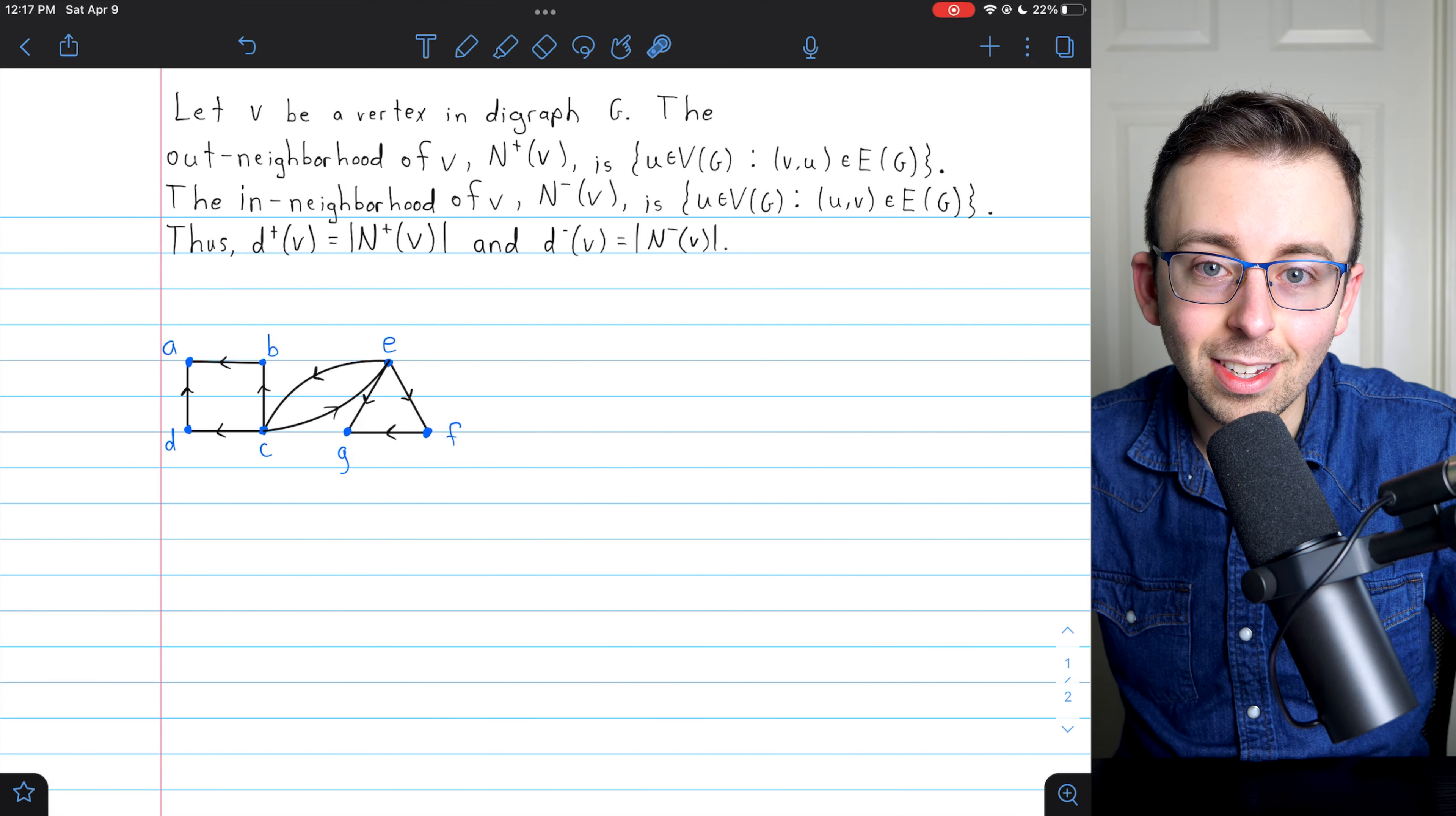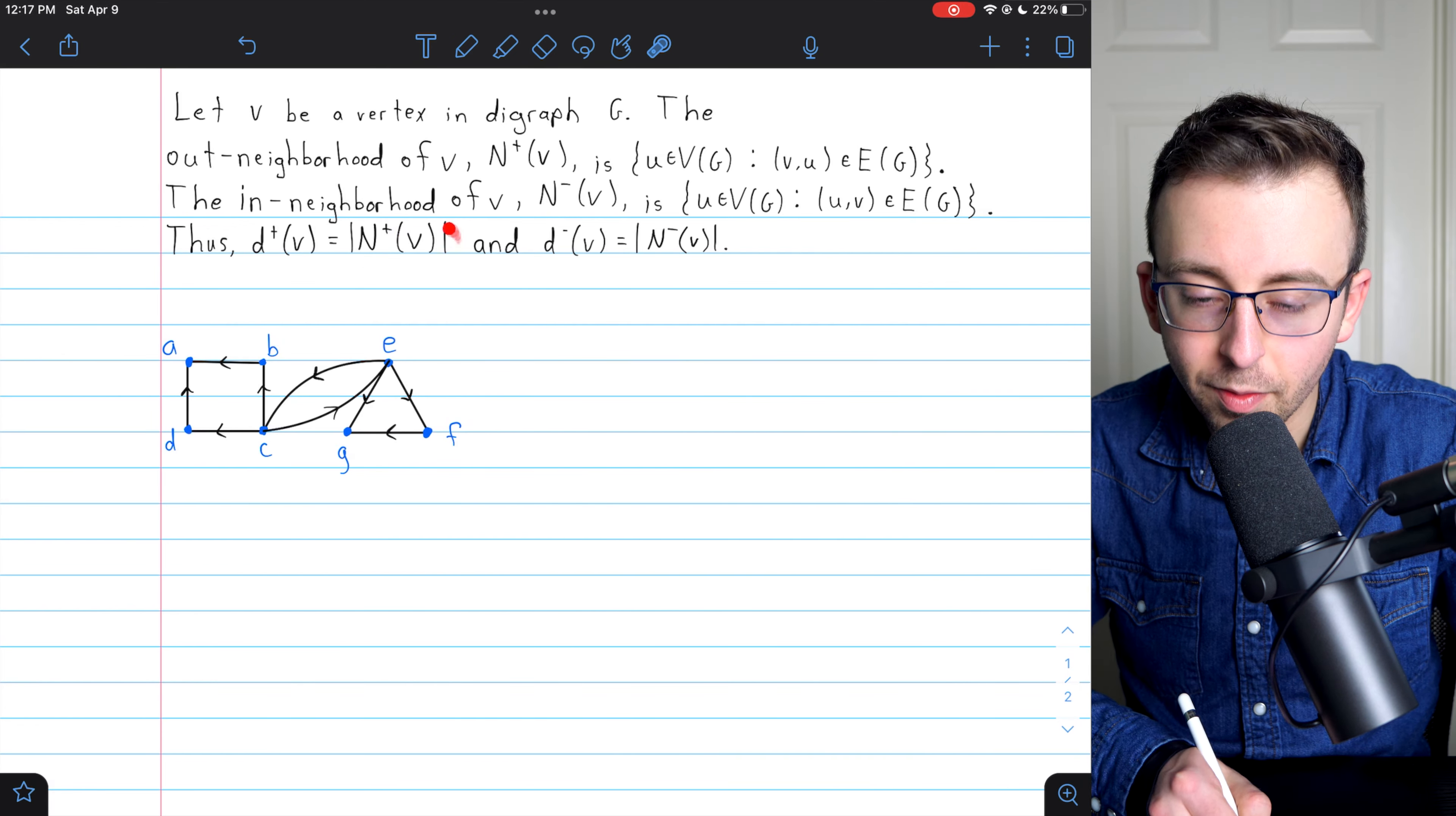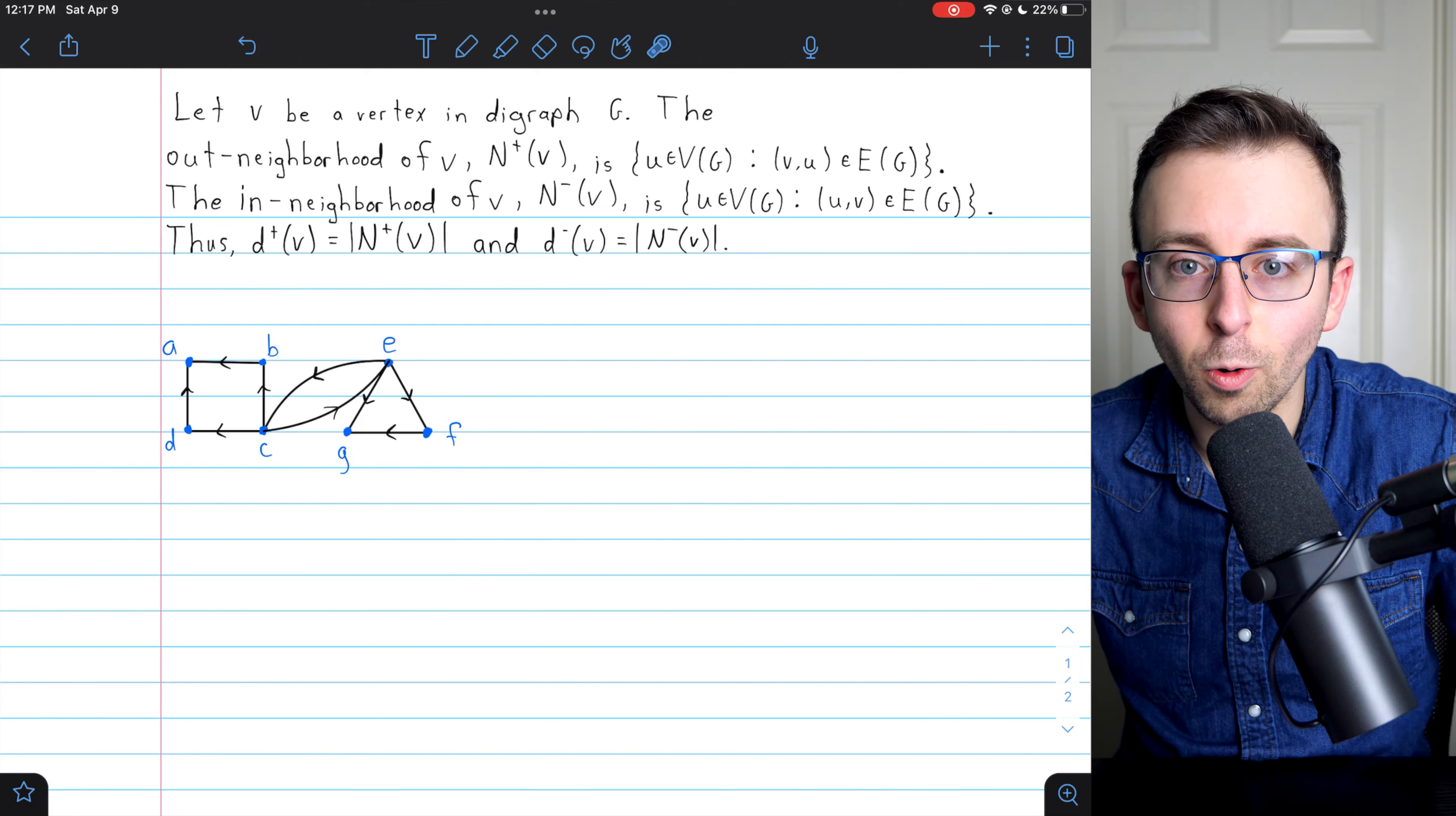These are the vertices that you can get to directly from V, because there is an edge going from V to them. Those vertices make up the out-neighborhood of V. Thus, the cardinality of the out-neighborhood of V is the same as the out-degree of V. And I'll leave a link in the description to my lesson talking about the degrees of vertices in directed graphs.